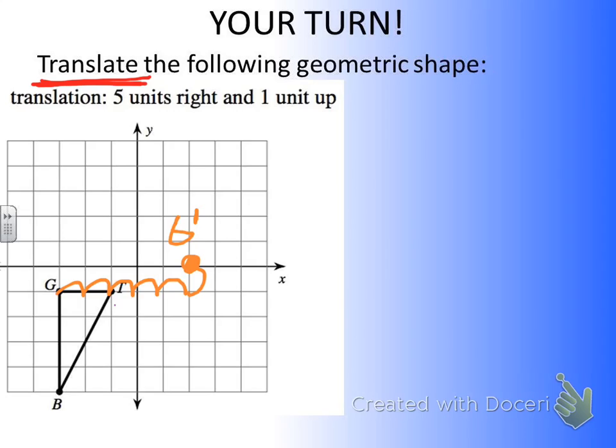All right, now let's move to point T. So we go one, two, three, four, five to the right, one up, draw the point, and there is T. But remember, it's the same point but moved differently, so we're going to put T prime or T apostrophe.